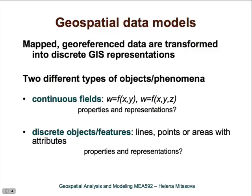First, we need to distinguish two different types of objects or phenomena represented in GIS. The first type are continuous fields, which can be represented as a bivariate or trivariate function. The second type are discrete objects or features, represented as lines, points, or areas, each with attributes assigned to them.